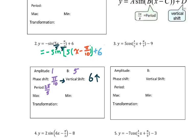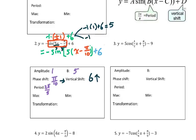For maximum or minimum, you can use the transformed form or the original. This time let's use the original. Replace the sine part with plus or minus 1. We get negative 1 times (plus or minus 1), then plus 6. Negative 1 times positive 1 plus 6 gives 5. Negative 1 times negative 1 plus 6 gives 7. Therefore, maximum is 7 and minimum is 5.